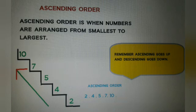So ascending order is when numbers are arranged from the smallest to the largest. For example, 2, 4, 5, 7, 10. 2 is the smallest and 10 is the largest here in the picture.